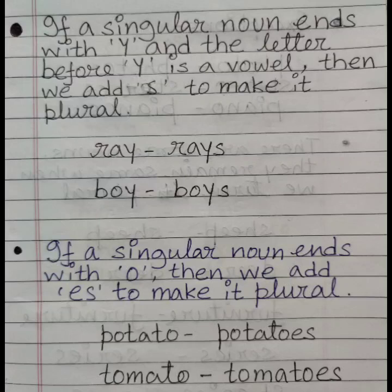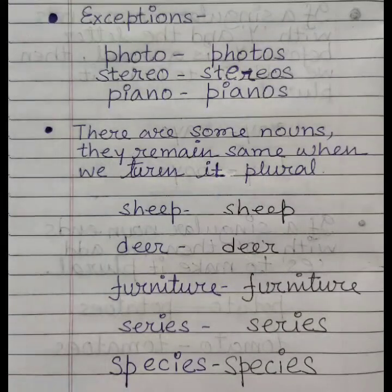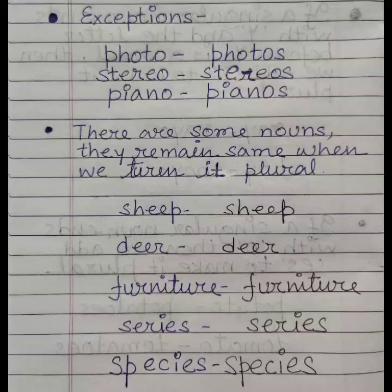Next, if a singular noun ends with O, we add ES to make it plural. Example: potato → potatoes, tomato → tomatoes. But students, there are a few exceptions. See the examples: photo → photos, stereo → stereos, piano → pianos.